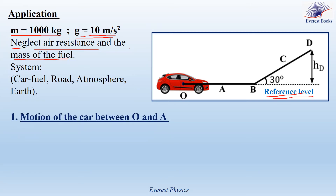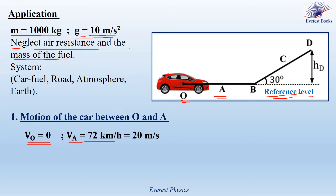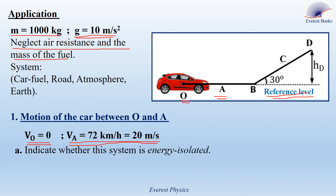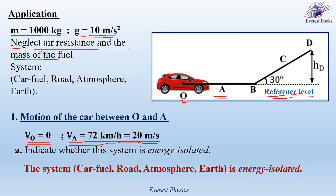In the first part of the question, we discuss the motion of the car between O and A. The car starts from rest under the action of the traction force and reaches point A with a speed of 72 km/h, equal to 20 m/s. Part A: Indicate whether this system is energy isolated. The system — car, fuel, road, atmosphere, earth — does not exchange energy with its surroundings. So, this system is energy isolated.